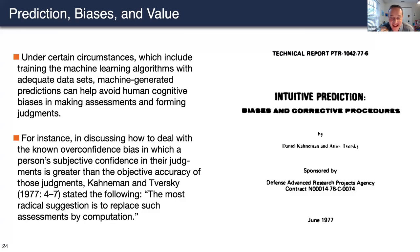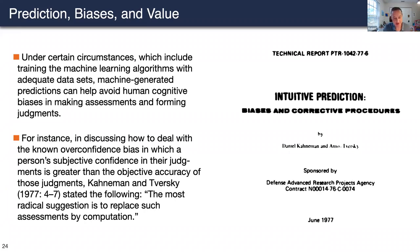Now let's talk about biases. Finding the Kahneman and Tversky article 'Intuitive Prediction: Biases and Corrective Procedures' was like a big breakthrough moment in developing the paper. Under certain circumstances — which include training machine learning algorithms with adequate datasets — machine-generated predictions can help avoid human cognitive biases in making assessments and forming judgments. We theorize about the role of computation in relation to biases.